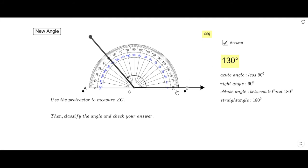This is what we call an obtuse angle because this angle is between 90 and 180. Let me move the protractor now and uncheck it. I'm going to try another angle.